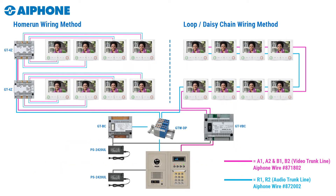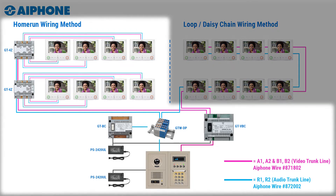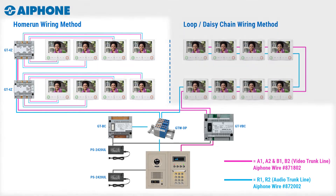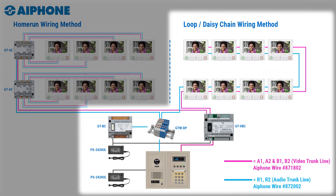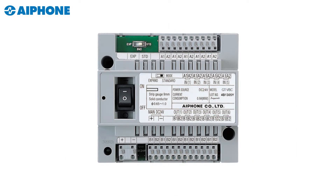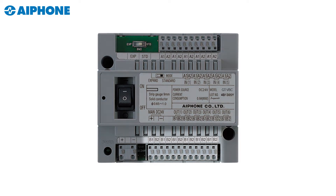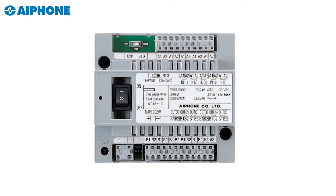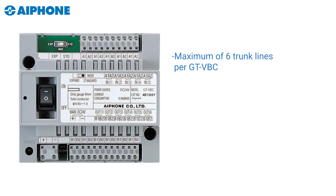There are two primary ways to wire the standard GT system. On the left hand side you'll see what we call the home run method, and on the right hand side you'll see what's called the loop method. When using either method you're limited to six trunk lines on the output of the GT VBC, and each trunk line is limited to a maximum of 25 apartments.